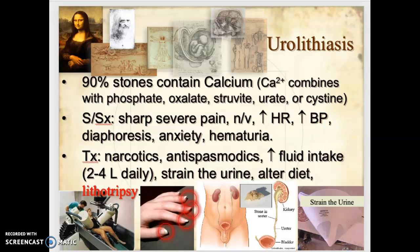Treatment includes narcotics for the extreme pain, antispasmodics to decrease spasms, and increased fluid intake to flush the stones out — often two to four liters per day. An important nursing intervention is straining the urine. There's a small cone with mesh at the bottom placed in the patient's bathroom with prominent signs to 'strain all urine.' Any stones captured are sent to the lab for analysis.